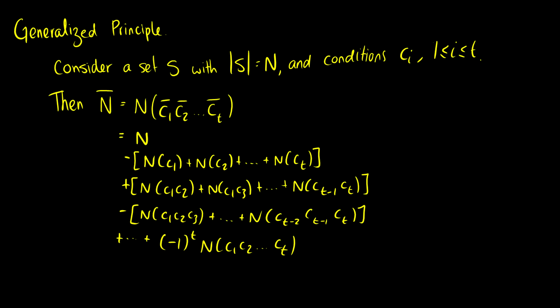So let's generalize this. If we consider a set S where the number of elements is n and we have conditions between 1 and t, then n(C1 bar, C2 bar, ... Ct bar) equals n minus the sum of individual conditions, plus all pairwise combinations, minus all triplets, and so on. Depending on whether you have an odd or even number of conditions in the last term, you'll either be subtracting or adding it.